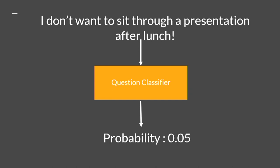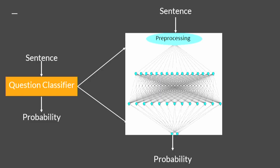The first intuitive approach is to check if the sentence has a question mark at the end. But since we are doing deep segmentation and scraping, our sentences do not always have question marks. To overcome this, we use deep learning. If you expand the question classifier, inside there is some preprocessing and several layers. We will go through them one by one.